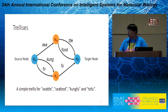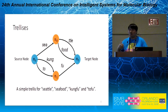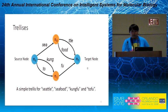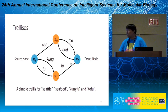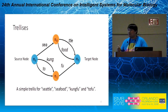The trellis structure is generally a directed acyclic graph with a source node and a target node, where every path from the source node to the target node corresponds to a certain data sequence. Here we show a simple trellis structure consisting of four data sequences: Seattle, seafood, kung fu, and tofu. You can easily see that the shared information among the data sequences is effectively identified by the shared or merged edges of the trellis, so the trellis representation is very efficient for the encoded data sequences.